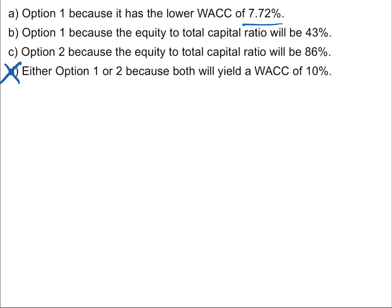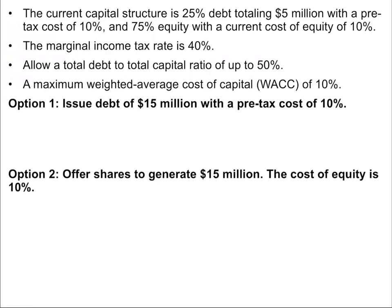Now let's look at choice B: option one, because the equity to total capital ratio will be 43%. Well, if the equity to total capital ratio is 43%, that means the debt to total capital ratio would be 57%. The debt to total capital ratio can't be more than 50%, so choice B is wrong — a 57% debt ratio is not allowed.